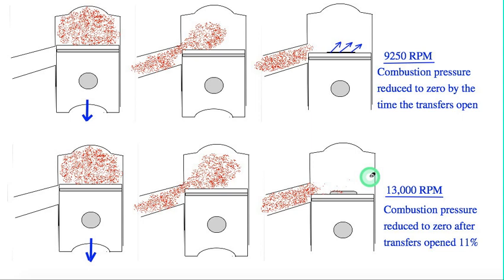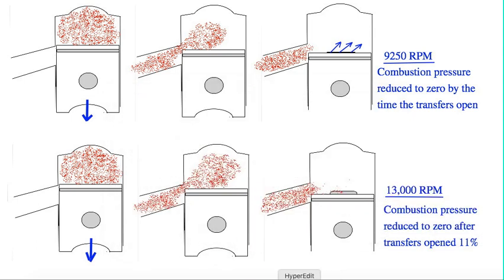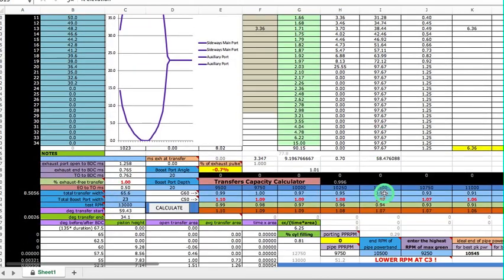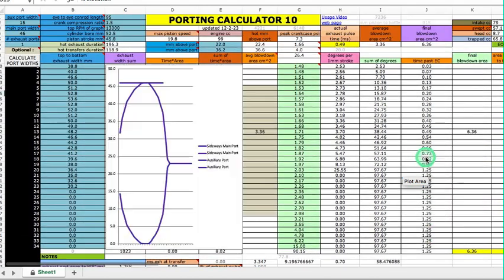And that reduced the trapped CC from 70.4 to 65.8, so it reduced the true engine size by seven percent. And then on my porting calculator, I figured that it only gave me one percent increase in transfer capacity, so it wasn't a good trade-off.